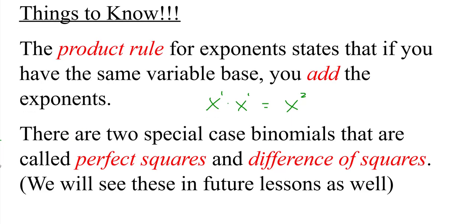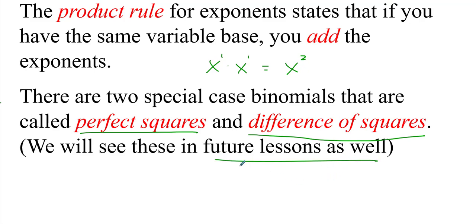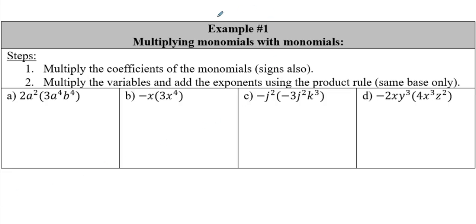The other things we're going to talk about are some special case binomials. We have what we call perfect squares, and then we also have another one called the difference of squares. These are good to get a heads up on now because you will see these in the future. Not much vocab today, so let's jump straight into it.